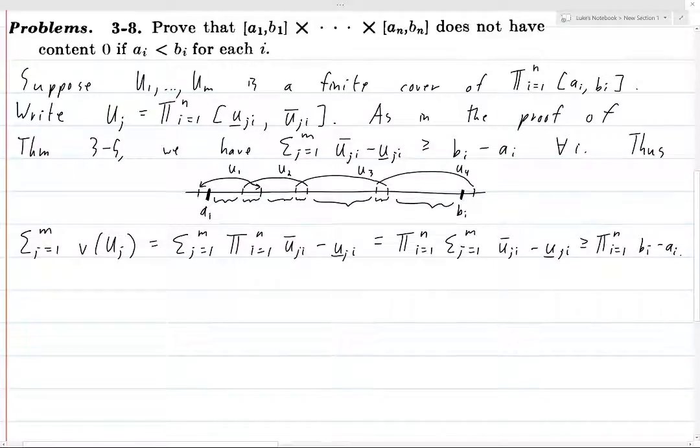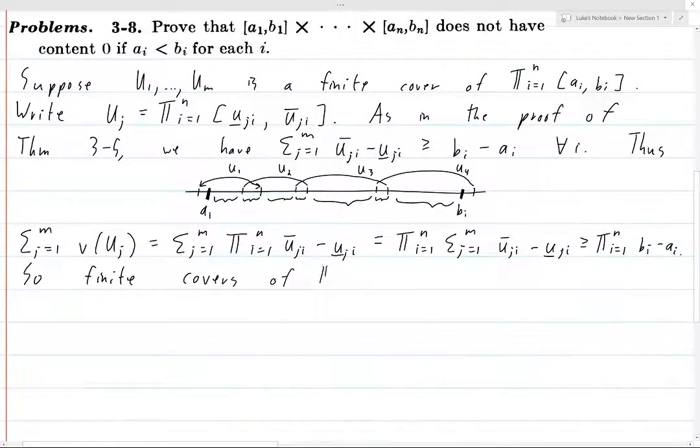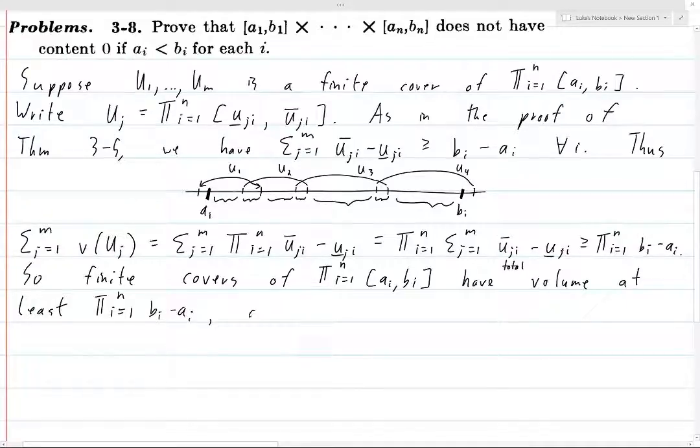Because now we know, so what this means is that finite covers of that set that we're looking at, the product from i equals 1 to n direct product ai, bi. So finite covers of this have volume, have total volume, at least this, as you would expect. And thus, they in particular cannot be arbitrarily small.